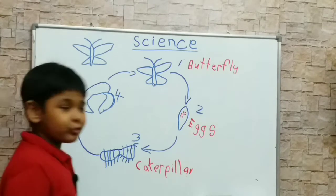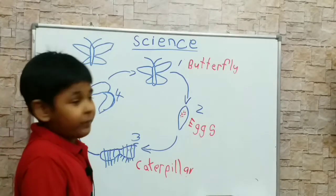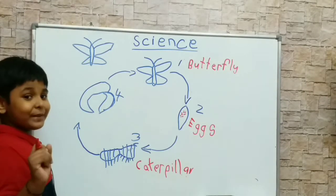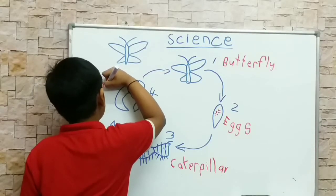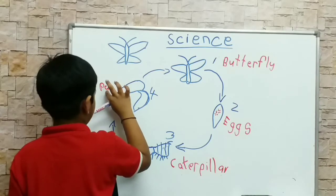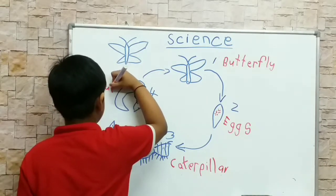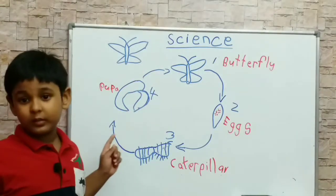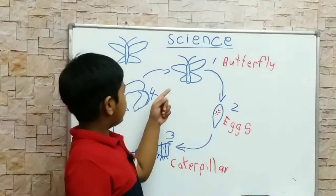So student, the pupa is coming out to butterfly — that's why it's pupa. So I write — so student we have P, U, P, A. Now I write it — P, P, P, P — pupa. So student, the pupa is here now.